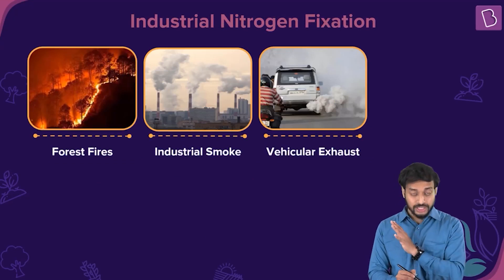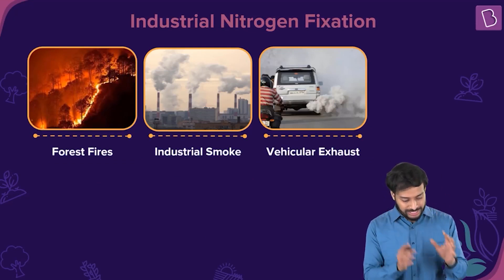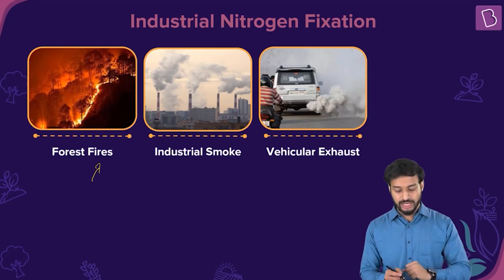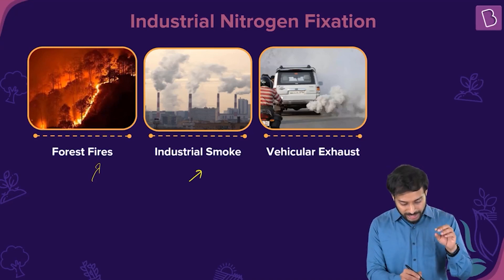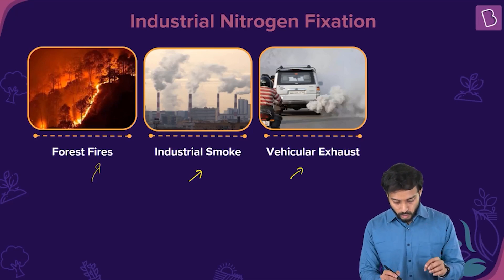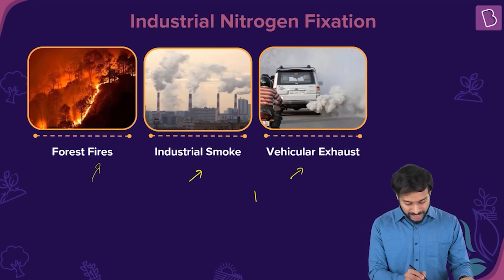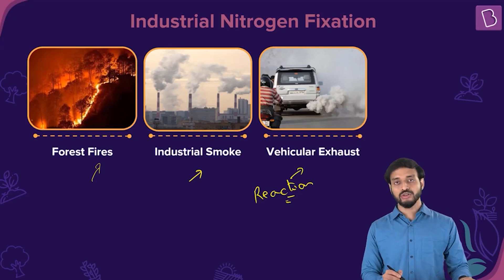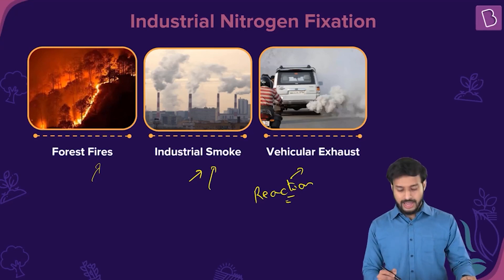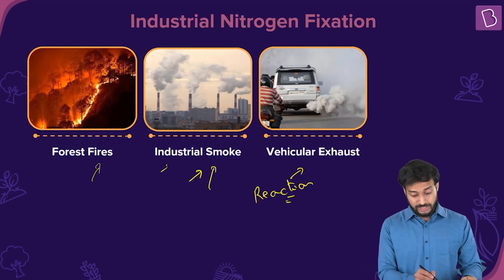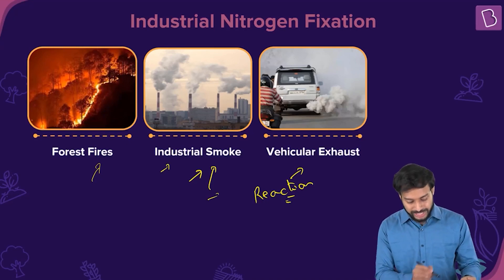Now for industrial nitrogen fixation: forest fires cause the nitrogen held in plants to combine with oxygen in the air to form nitrogen oxides. Industrial smoke and vehicular exhaust are also sources of nitrogen oxides, formed mainly because of the reaction of nitrogen and oxygen in air during various industrial processes and burning of fossil fuels. These processes use a lot of energy, which also aids nitrogen oxide formation.